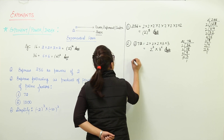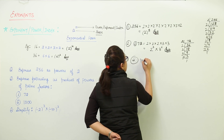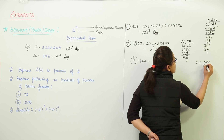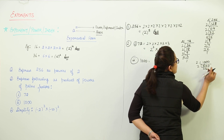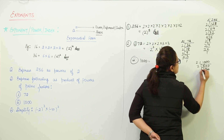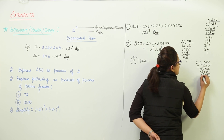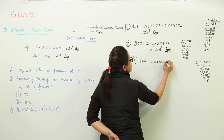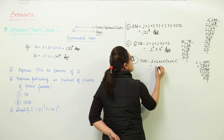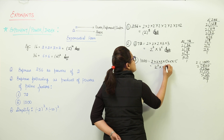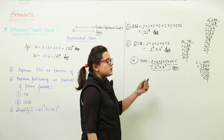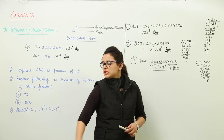Now for 1000, we find the factors: dividing by 2 three times gives 2, 2, 2 and then dividing by 5 three times gives 5, 5, 5. So 1000 can be written as 2 raised to power 3 into 5 raised to power 3. This is the exponential notation of 1000 as a product of prime factors.